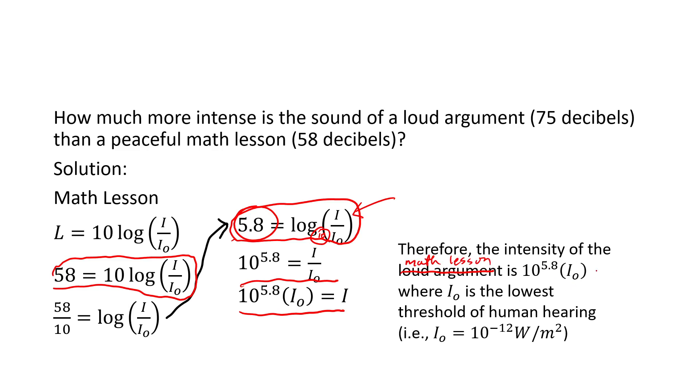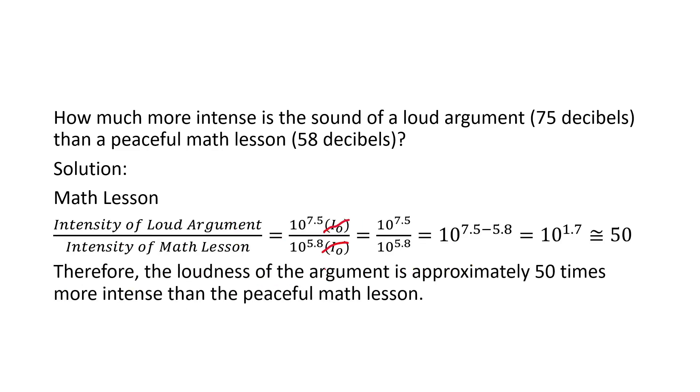Now, we want to compare the two. We want to know how much more intense one is than the other. So, we're simply going to divide. The intensity of the loud argument is 10 to the 7.5 I naught. The intensity of the math lesson is 10 to the 5.8 times I naught. Well, when the I naughts cancel out, as we've shown here, we get 10 to the 7.5 over 10 to the 5.8, which is 10 to the 7.5 minus 5.8, which is 10 to the 1.7, which is roughly 50. So, the loudness of an argument is approximately 50 times more intense than the peaceful math lesson.